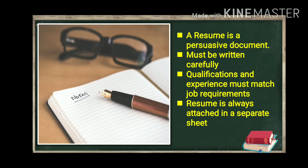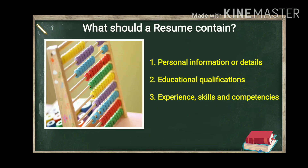The resume must be written on a separate sheet, not as a continuation of the application letter. There are three parts which together form a resume. The first one is personal information or details, where you mention your name, age, date of birth, address, contact number, and so on. The second part should contain your educational qualification, generally written in chronological order and in a tabular format.